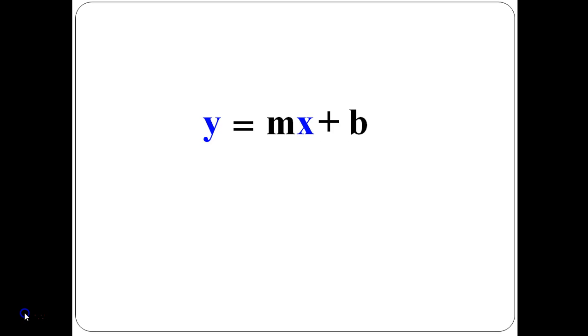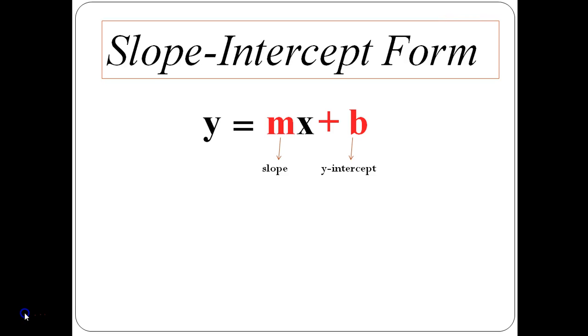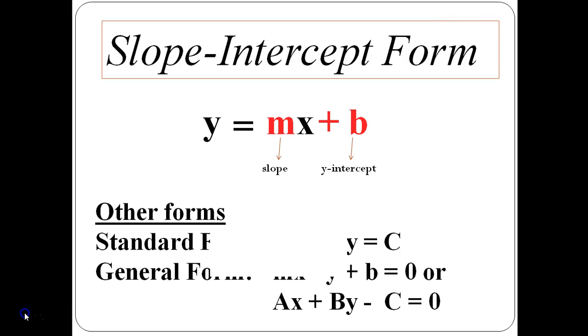M and B will be fixed real numbers. M represents the slope of the line or the rate of change, and B is the y-intercept. Because of this, y equals mx plus b is called the slope-intercept form. There are other ways to write a linear equation, but slope-intercept form is the most popular. That's because that form is very easy to graph.